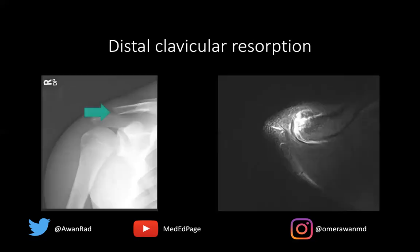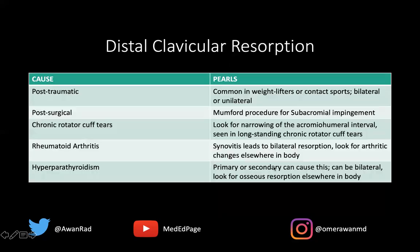What we see here on the radiograph is loss of bone along the distal clavicle — it almost looks like a rat ate out a piece of the bone. And if we turn to the MRI, notice that there's bone marrow edema along the distal clavicle. There's also a little bit of subperiosteal edema, and the bone looks a little ill-defined on the subchondral plate. So: distal clavicular resorption.